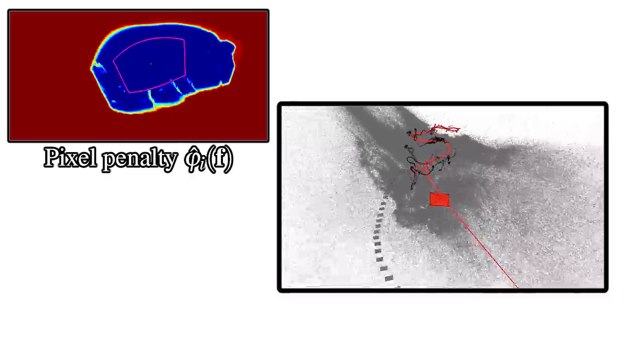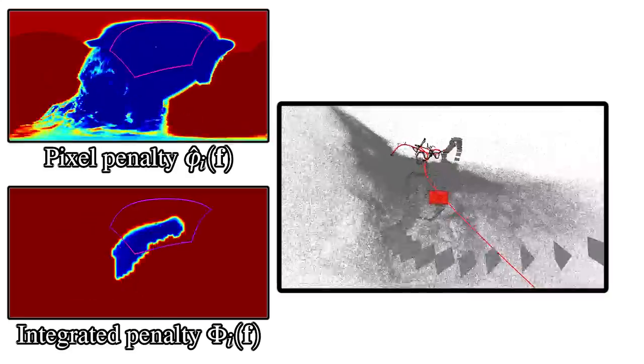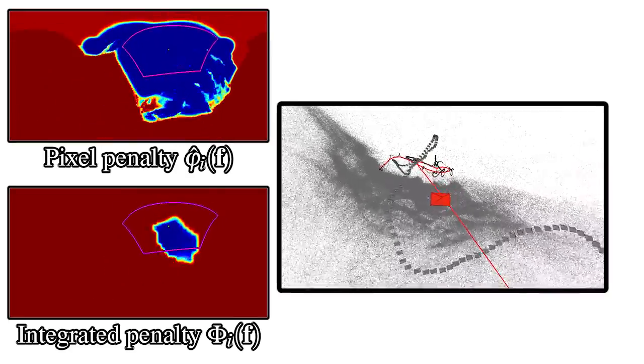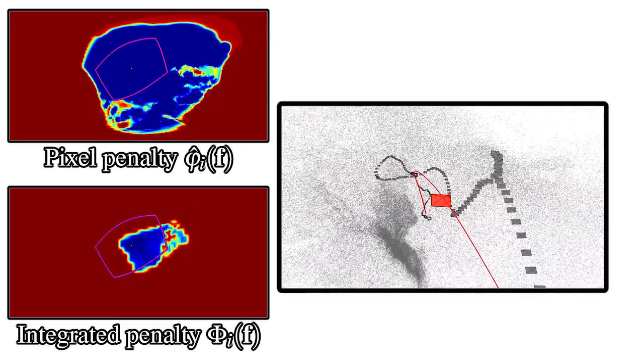In a pre-process, we compute a per-pixel image-based rendering penalty. Then we integrate it in screen space for all possible view directions. This gives us our pre-computed IBR fitness term. Optimizing this quantity together with smoothness is now easy.